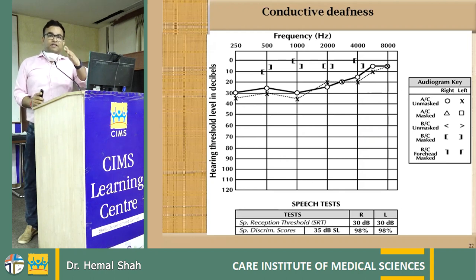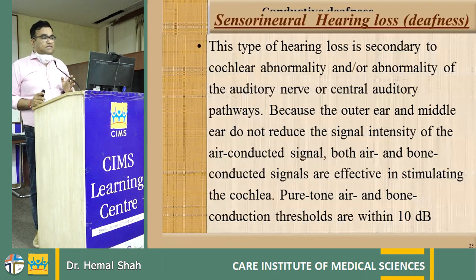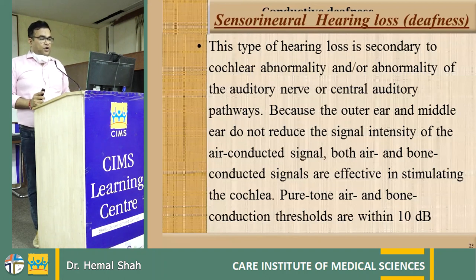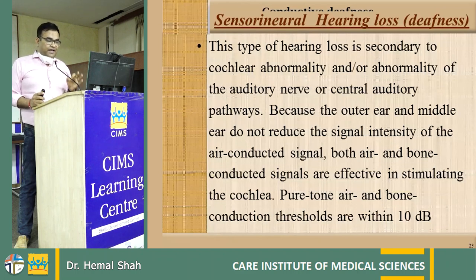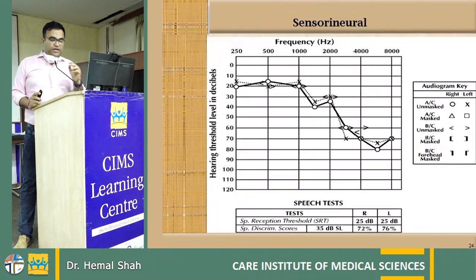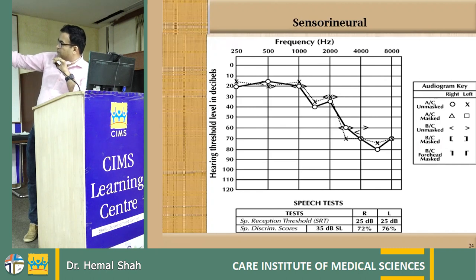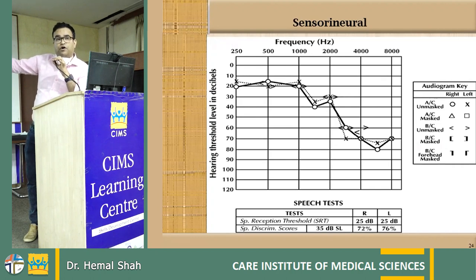Sensorineural hearing loss is secondary to cochlear abnormality, abnormality of the auditory nerve, or the central auditory pathway. Because the outer and middle ear do not reduce signal intensity, both air and bone conducted signals are effective in stimulating the cochlea, so pure tone air and bone conduction thresholds are within 10 dB of each other — no air-bone gap. On the audiogram, a sloping graph without any gap is seen, typically sloping from 1000–2000 Hz, indicating high-frequency sensorineural hearing loss.